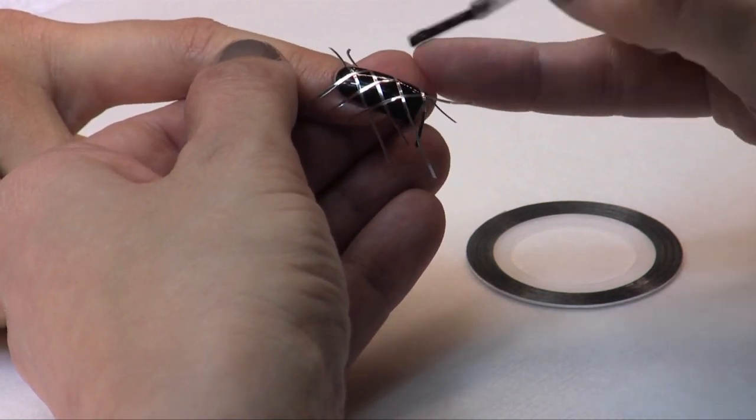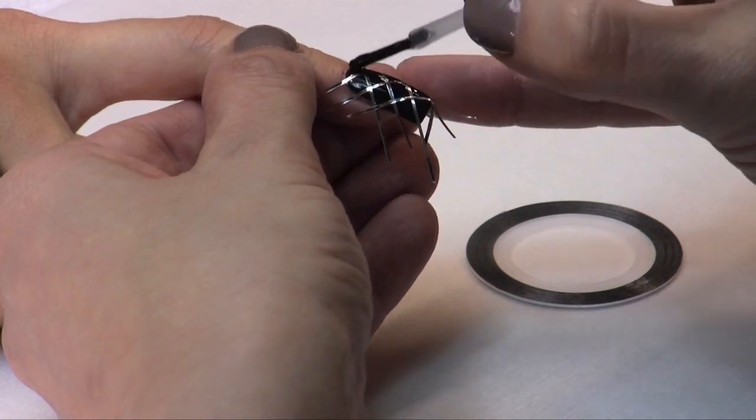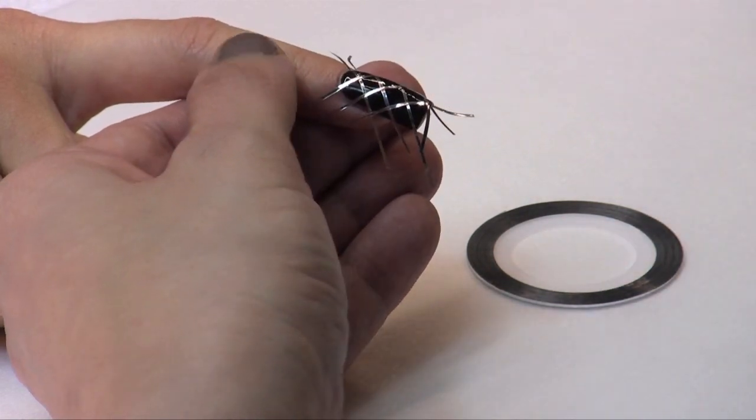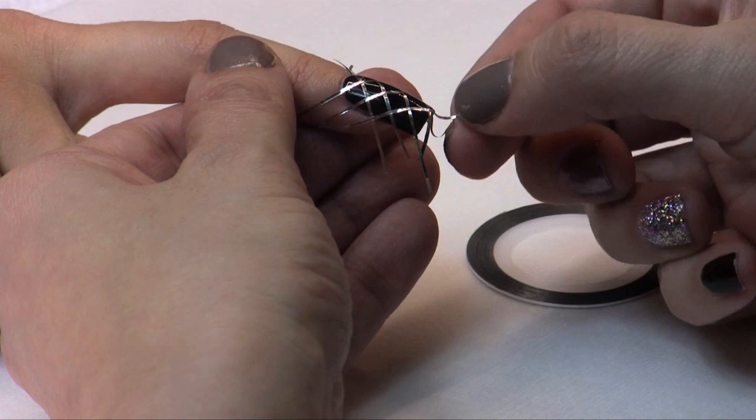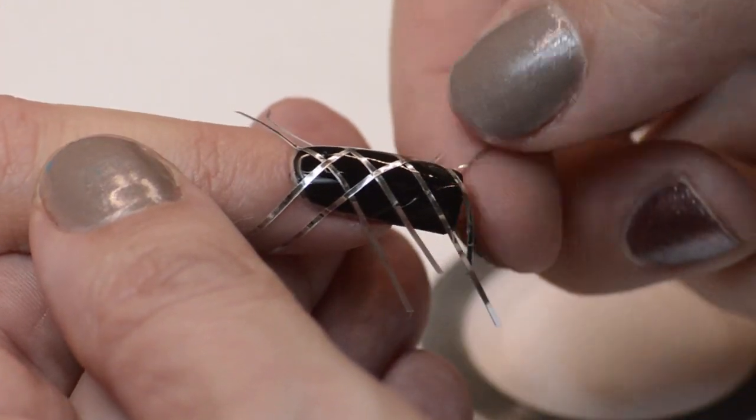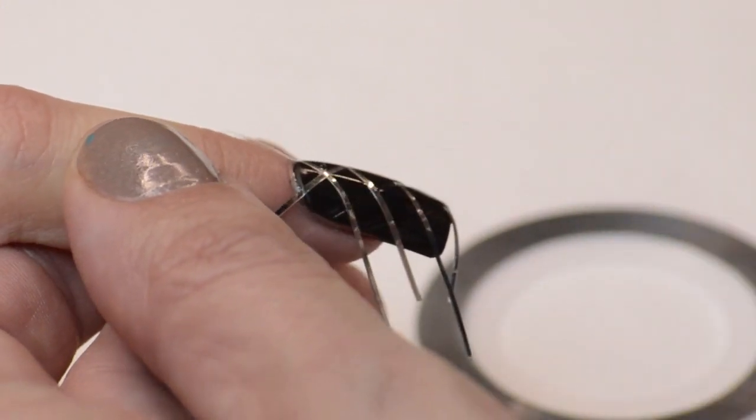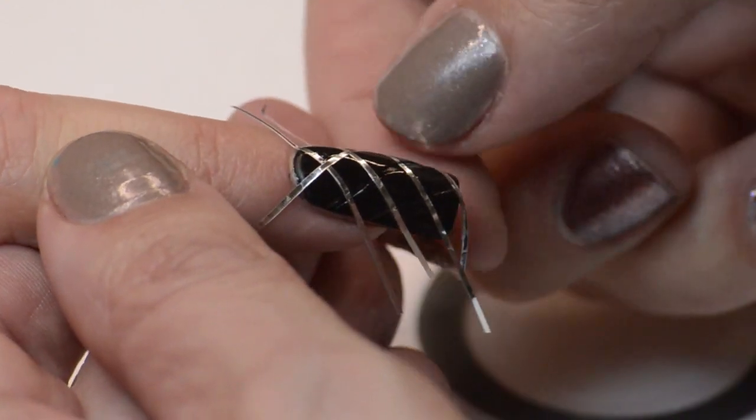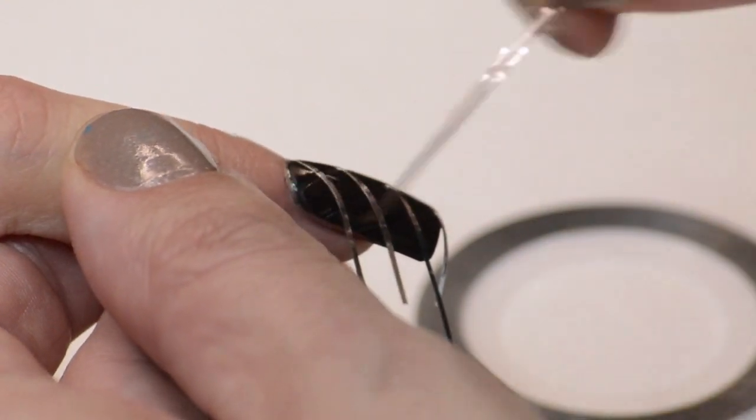The goal is you want to start pulling these off before this starts to completely dry just to get the best effect. When you're removing them, you want to try and remove them in the opposite order that you placed them, so starting with the last one you placed, start pulling them off.